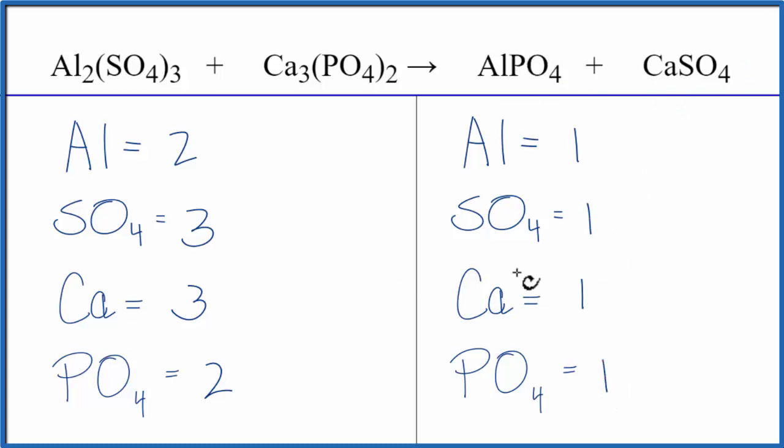Why don't we start by balancing the calcium? That might even balance the sulfate. So I have three here, one here. Coefficient of three. One times three gives me three calciums. Those are balanced. One sulfate times three, that gives us three, and those are balanced.